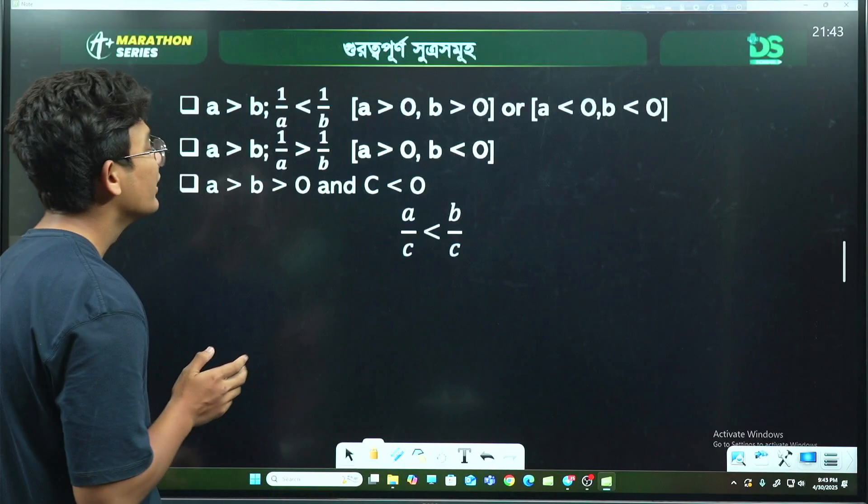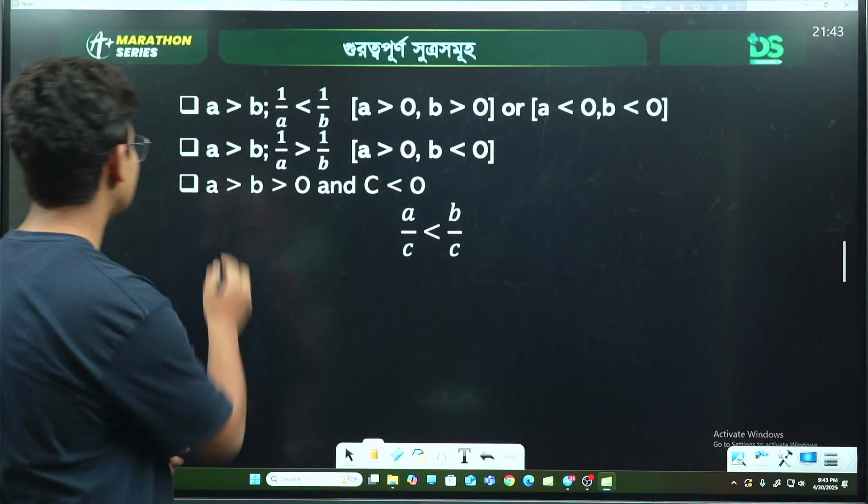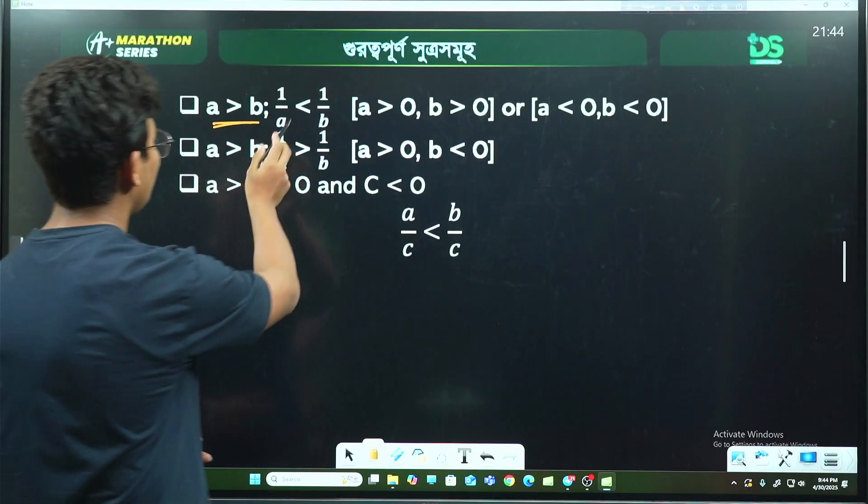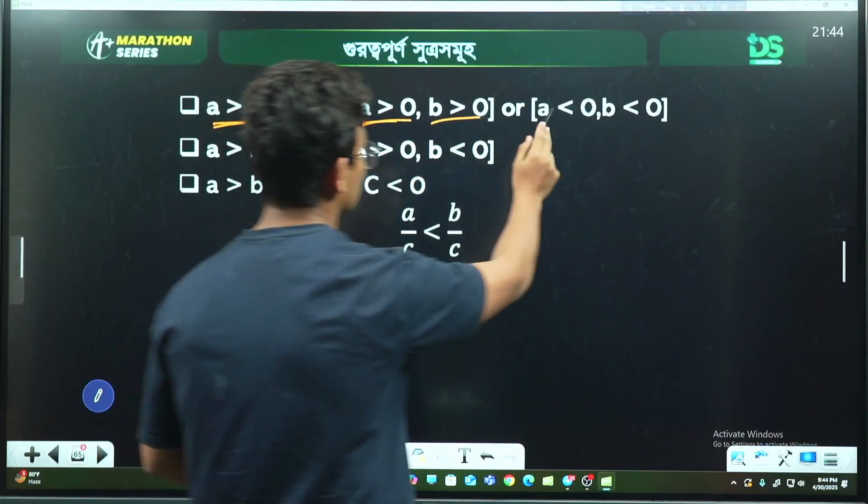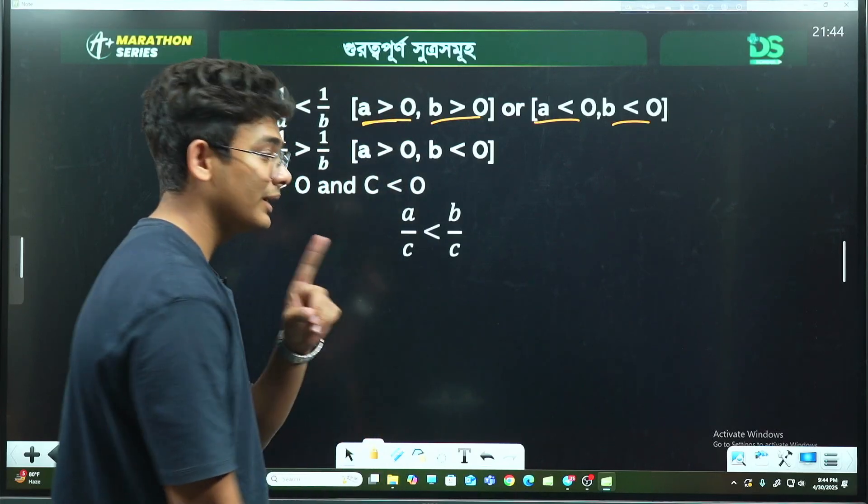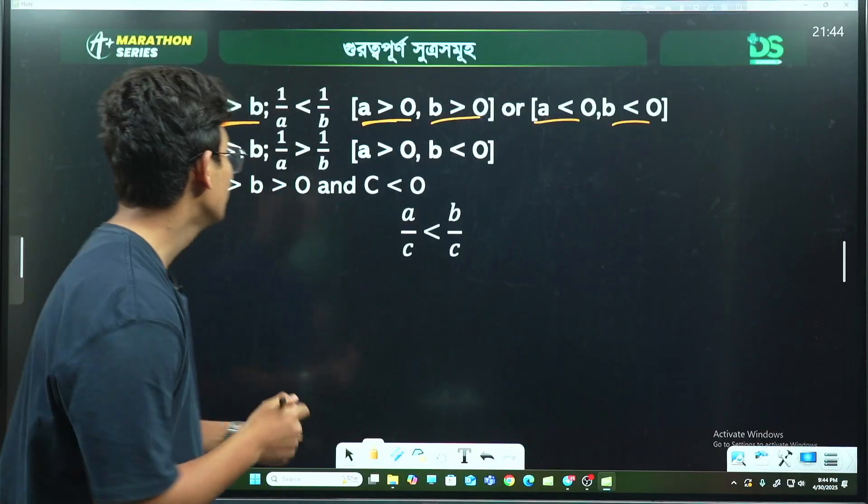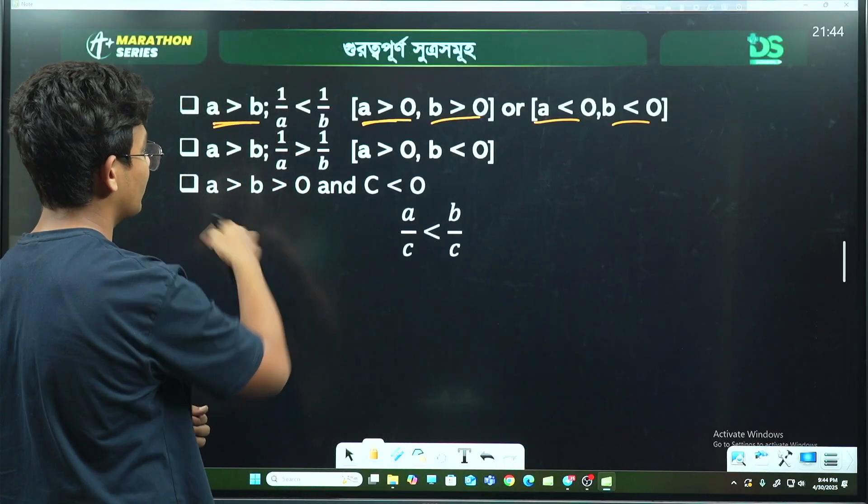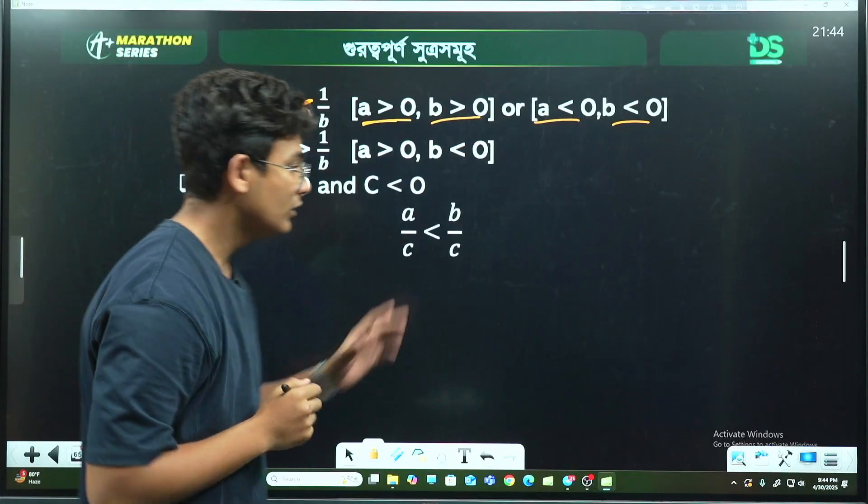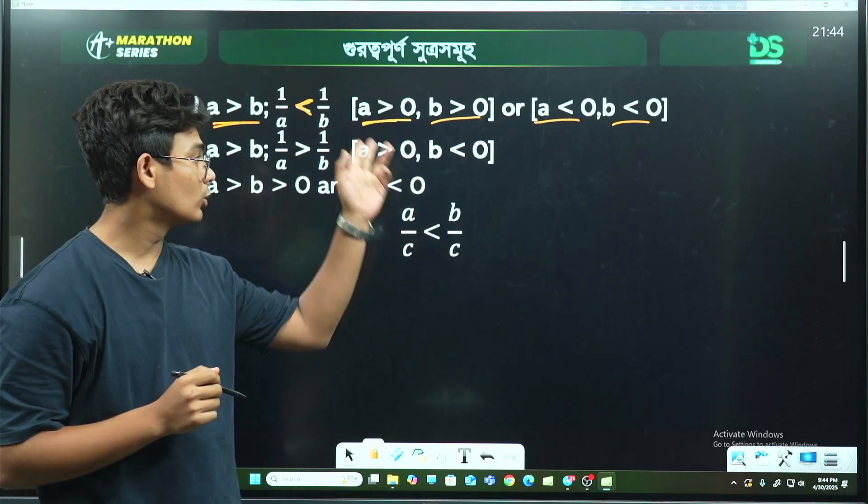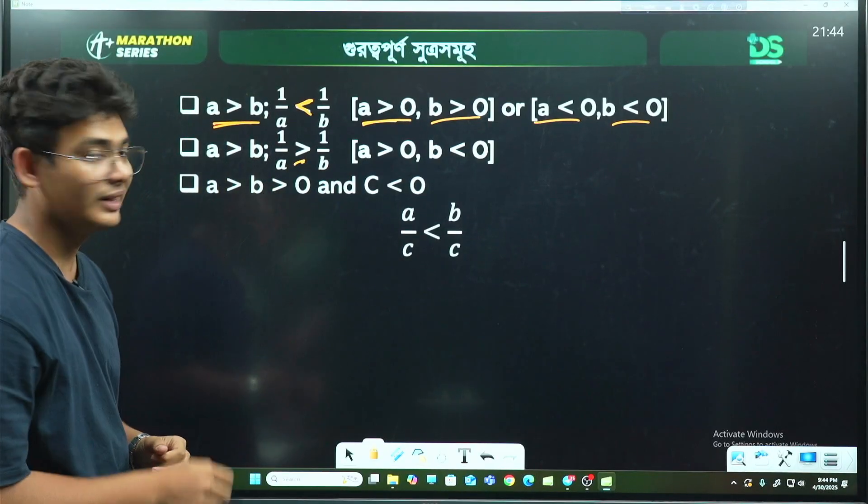The main formula is: if a > b, then a/c > b/c if c > 0, OR a/c < b/c if c < 0. When you divide by a negative number, the inequality sign reverses. If you take the reciprocal, the signs also change - 1/a versus 1/b, the inequality flips.